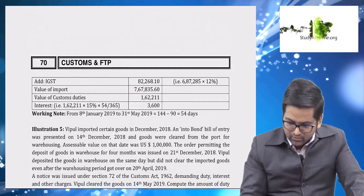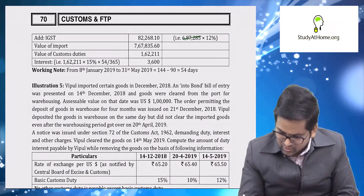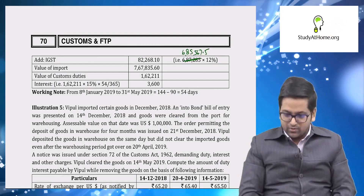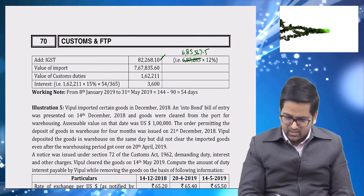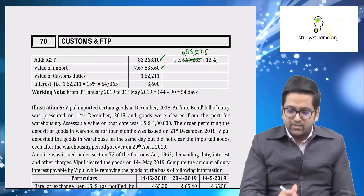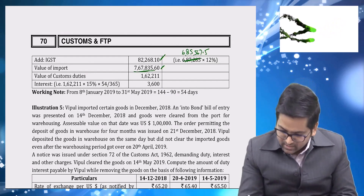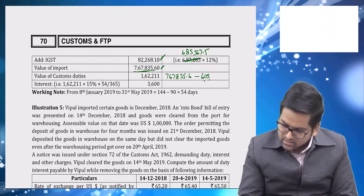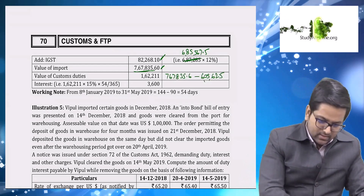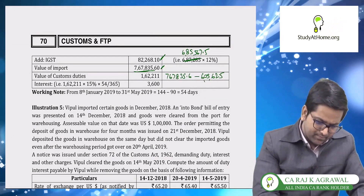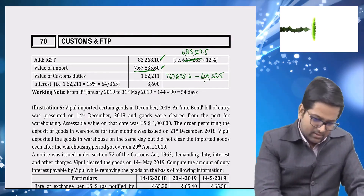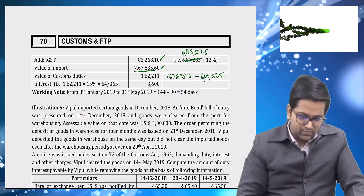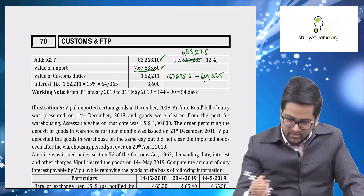Adding up BCD, SWS, and IGST (at 7.5 into 12%), the total comes to approximately ₹82,268.1. The total value for import including all duties gives assessable value as ₹7,67,835.6. Subtracting the assessable value of ₹6,05,625 from this total: ₹7,67,835.6 minus ₹6,05,625 gives total custom duty of approximately ₹1,62,211. Round off the custom duty payable.